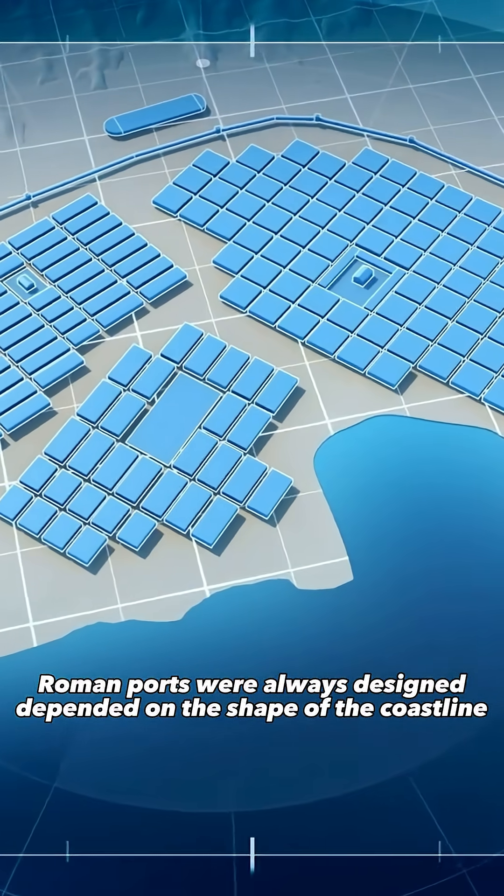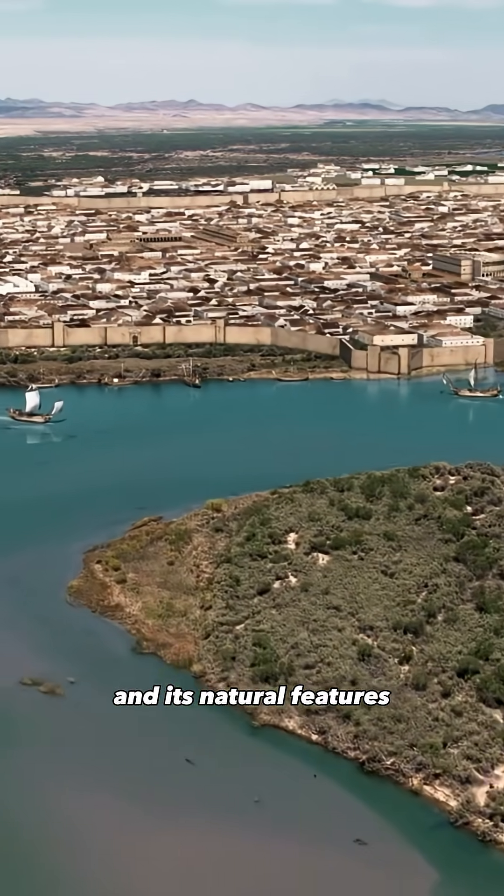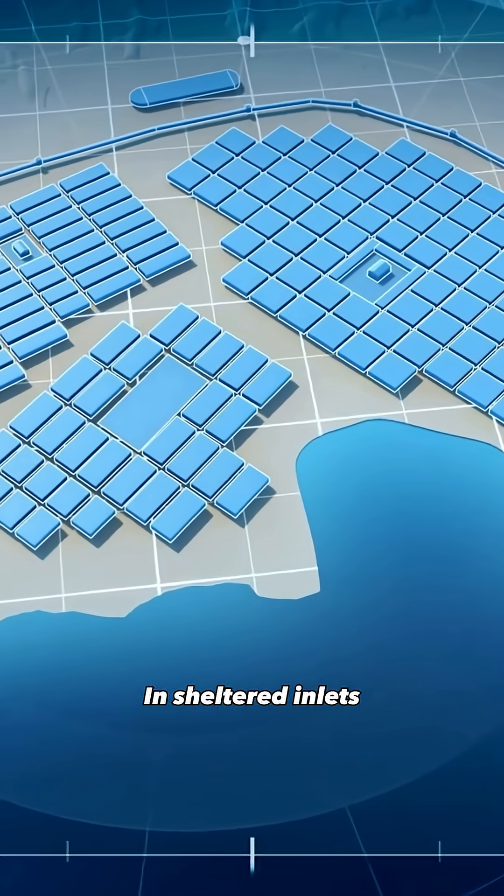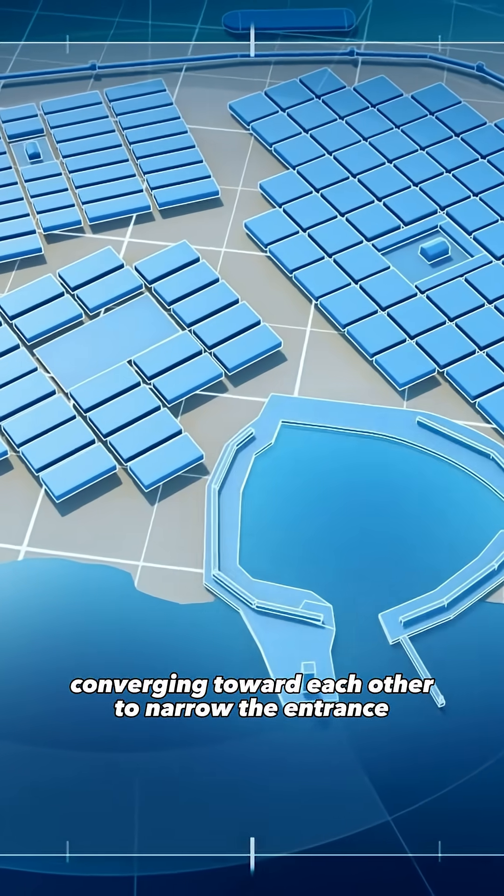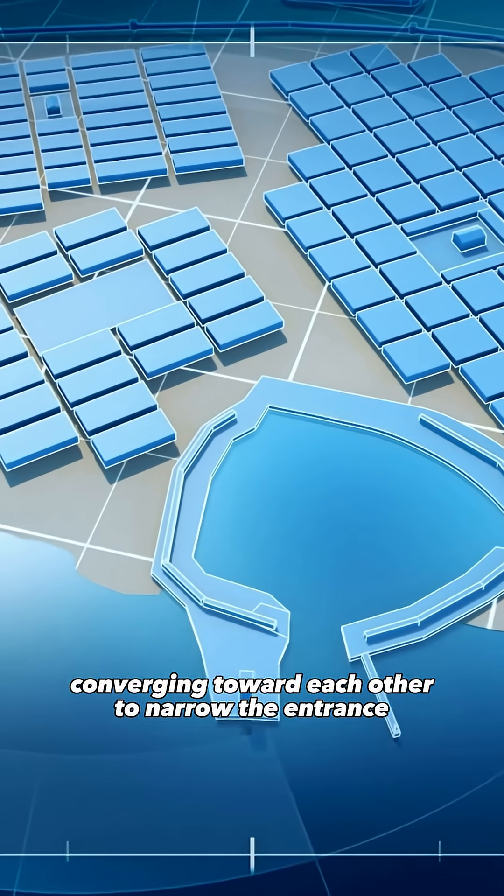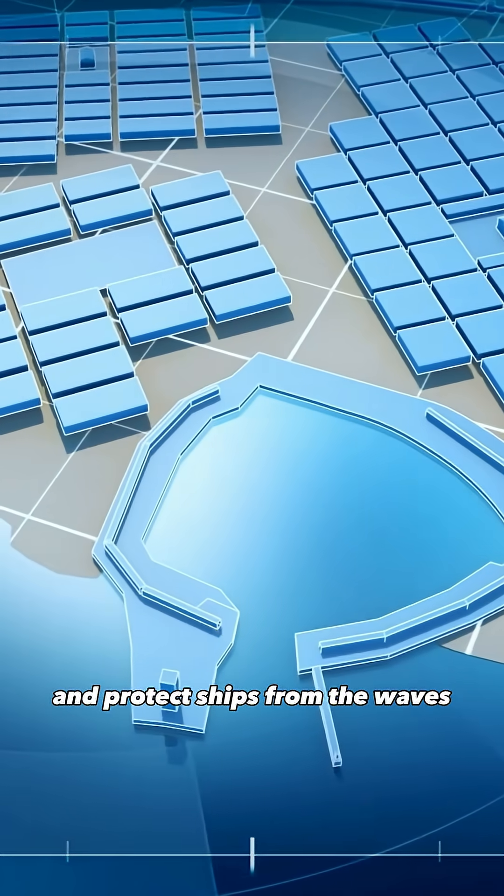Roman ports were always designed depending on the shape of the coastline and its natural features. In sheltered inlets, engineers often built two curved breakwaters converging toward each other to narrow the entrance and protect ships from the waves.